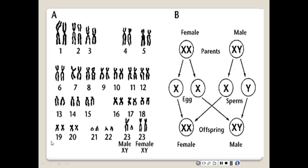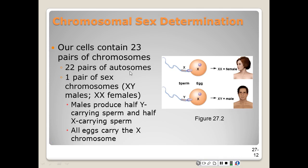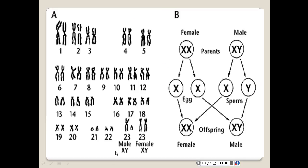Here are the 22 pairs of autosomes shown in this diagram. And then that 23rd pair — the very last one — will be an XY, meaning it's a male, or XX, meaning it will be a female. You have 23 pairs of chromosomes total: 22 are considered autosomes, and one pair constitutes the sex chromosome.